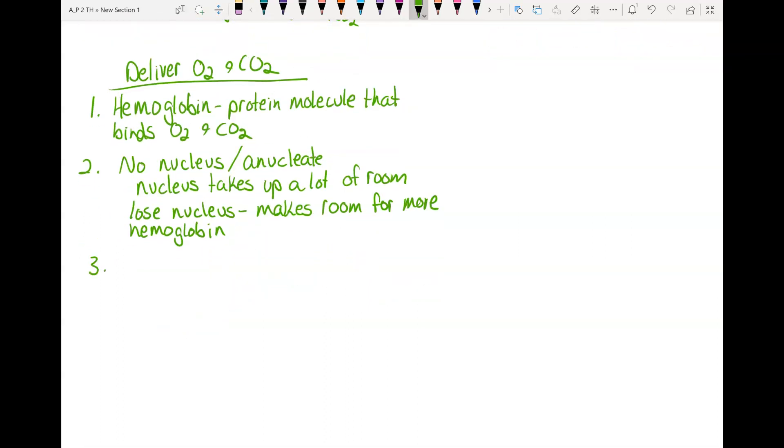Another important feature is that they have no mitochondria. Let's think about this for a few minutes. Erythrocytes do not have mitochondria. Now they're still living and they still need energy. But they can make ATP by glycolysis, which doesn't use the mitochondria. Think about the significance of not having mitochondria and how that allows them to deliver more oxygen.